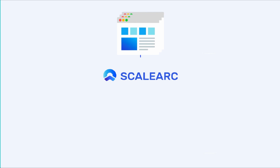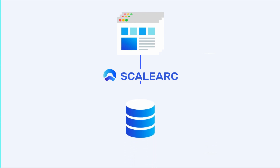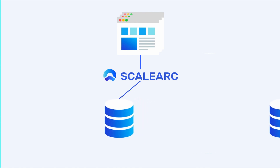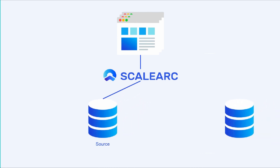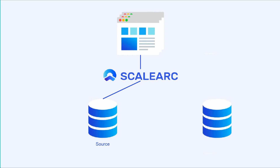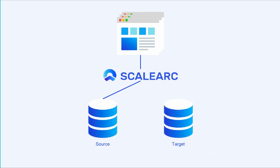To migrate your database, create a new ScaleArc cluster or start with an existing one. Your source database nodes are defined there. Then you will add the primary read-write node of your target database to that cluster, and set it as a standby so it doesn't receive any traffic yet.